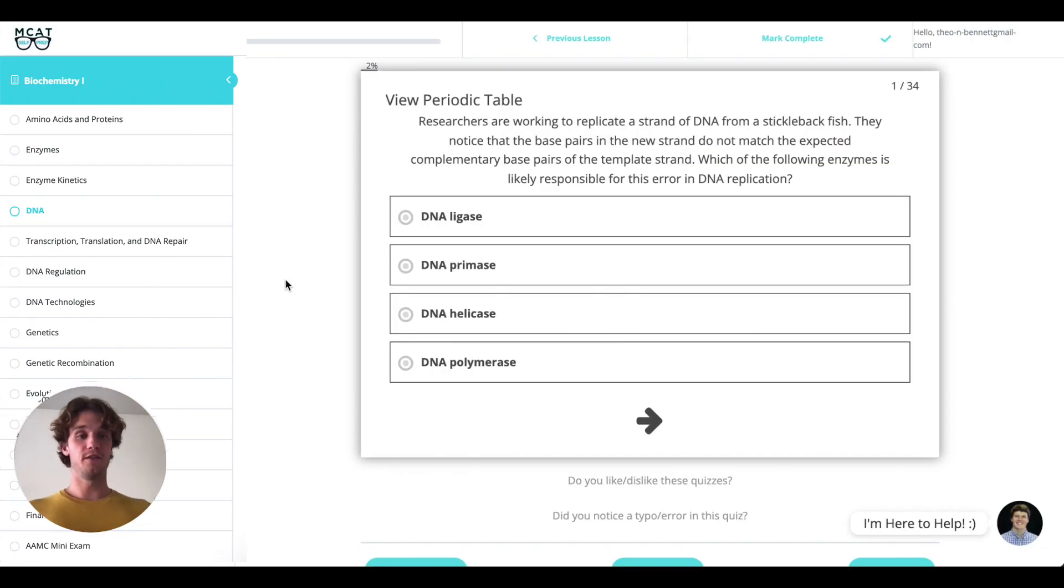So here we're dealing with a fish, and fish are eukaryotes. We see there's this error and we need to figure out what caused it. Since it's just one base pair that's not matching up, we know the enzyme responsible for matching up those base pairs is DNA polymerase.